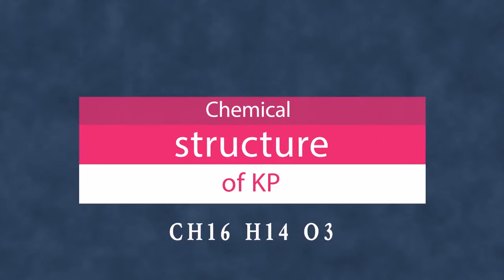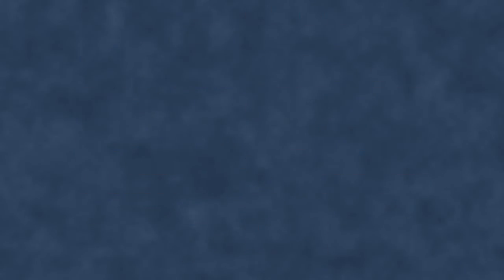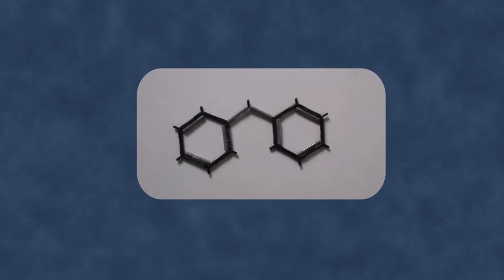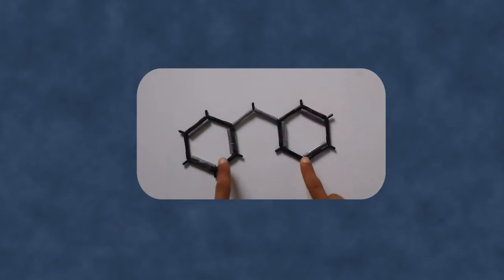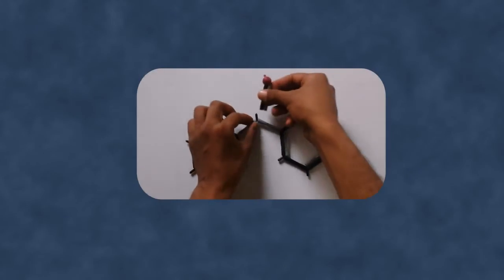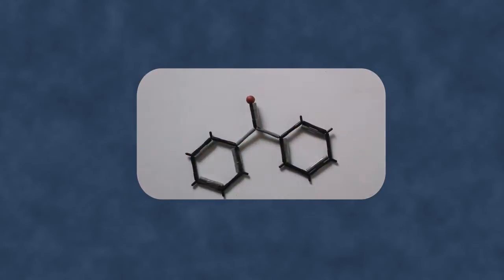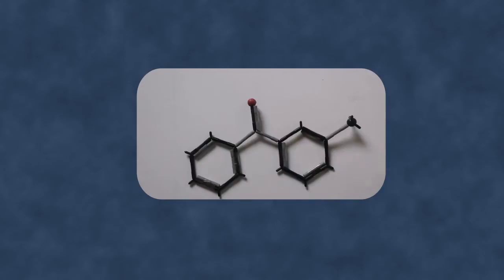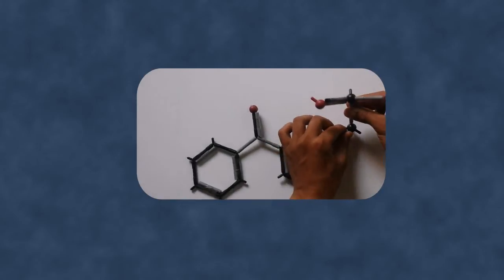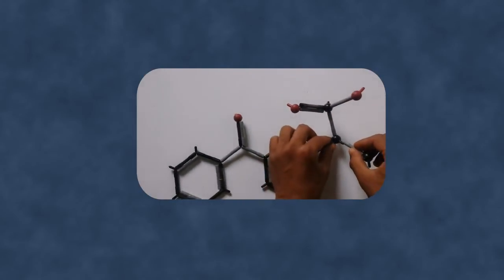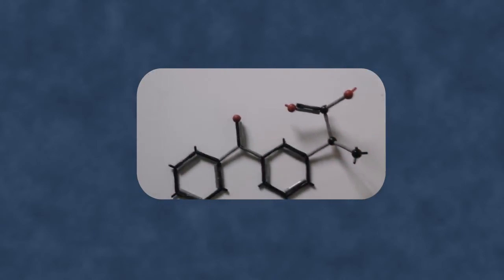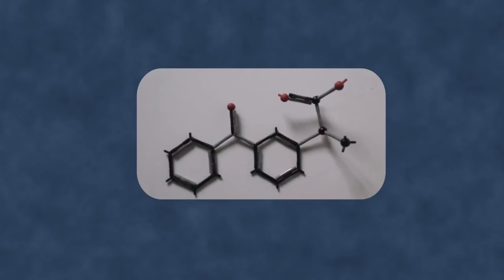Chemical structure of ketoprofen: 2-benzyl phenyl-3-propanoic acid. The structure contains a benzene ring connected with a carbonyl group along with the chiral carbon which connects to carboxyl group, methyl group, and hydrogen atom. This is the final structure of ketoprofen.